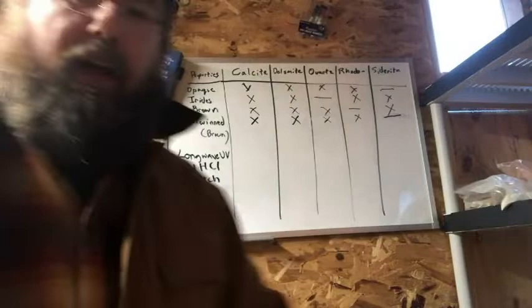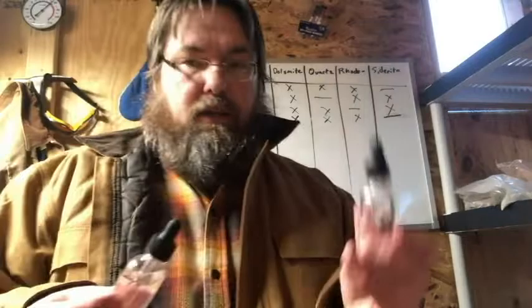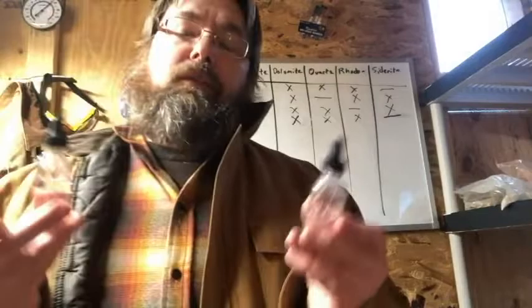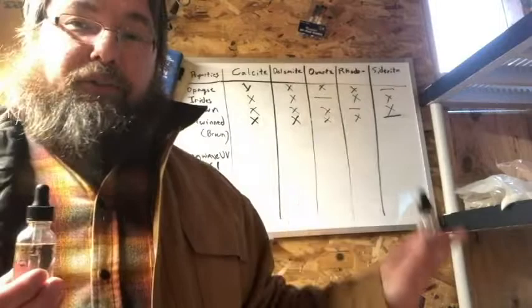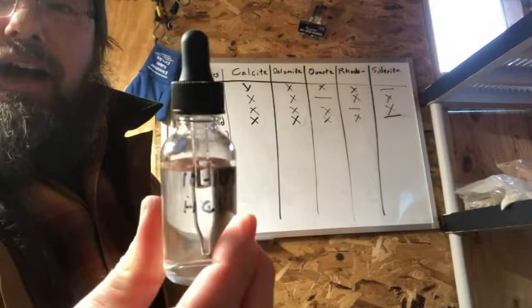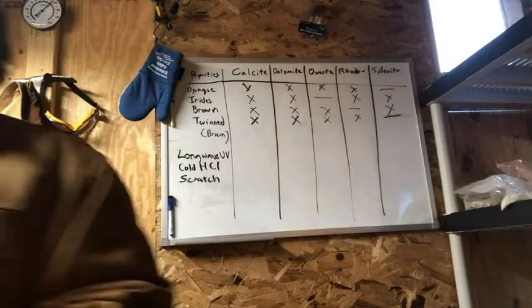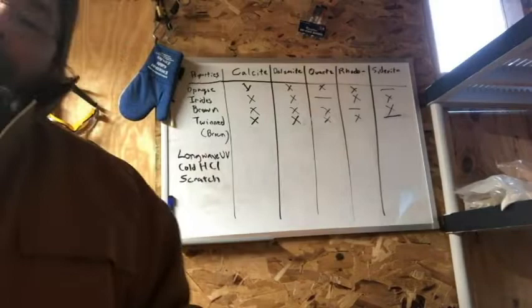Cold HCl — I buy muriatic acid from the hardware store and dilute it to 3.5% and 10 to 15%. Calcite, if something is almost pure calcite, you drop the weak HCl on it and it's going to go crazy — fizz, bubble, make noise. For more rocks with manganese in them, dolomitic rocks, or siderite, you might need a higher acid concentration to get that fizz. To fluoresce or not to fluoresce? That is the question. Let's turn the lights out.